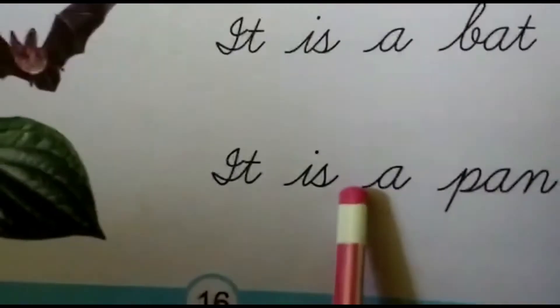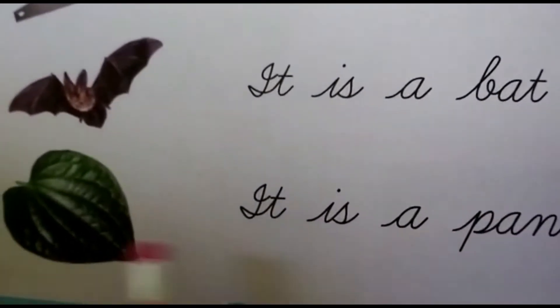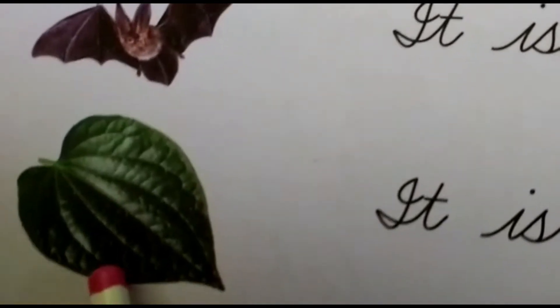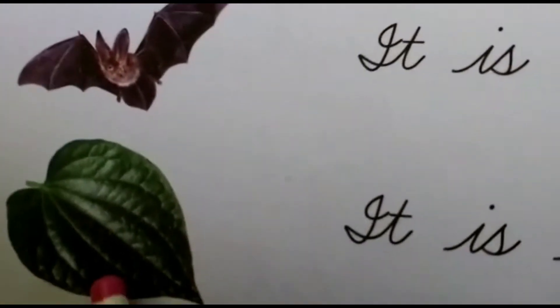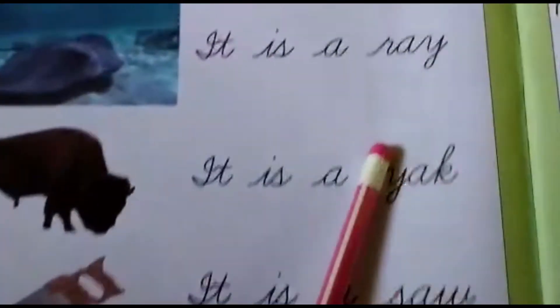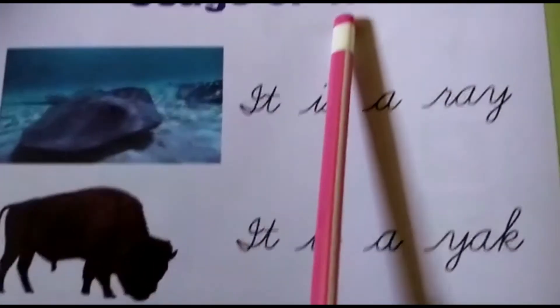It is a pond. Pond means wretchilai. Pond means wretchilai. Okay, once again children — usage of 'it'.